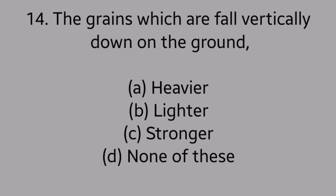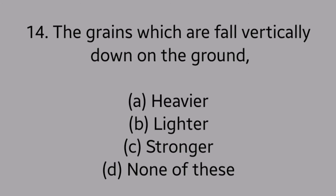Question number 14. The grains which fall vertically down on the ground are: option A. Heavier, option B. Lighter, option C. Stronger, option D. None of these. Answer is option A. Heavier.